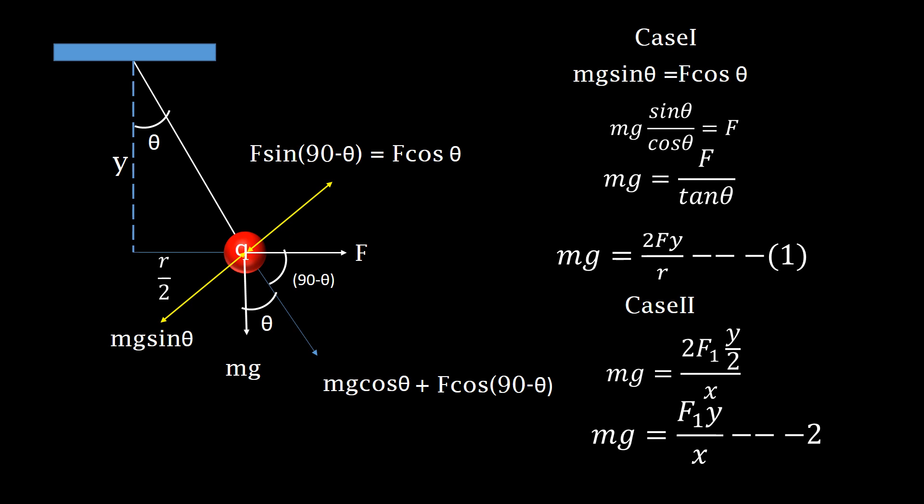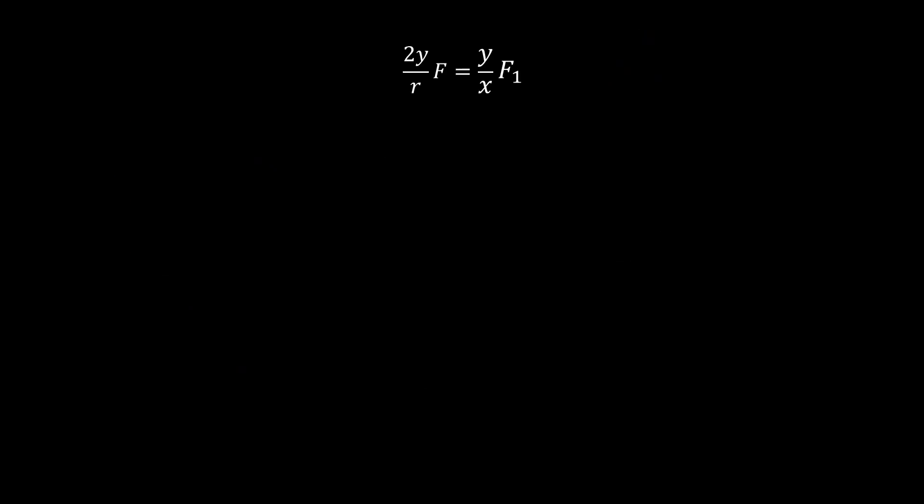Since the left hand side of equations 1 and 2 is the same, therefore the right hand side of equations 1 and 2 are the same. Let's equate them. We get the equation at equilibrium as 2y upon r times F equals y upon x times F1.